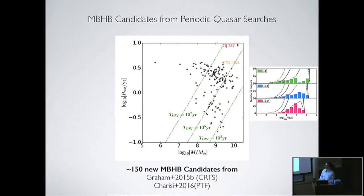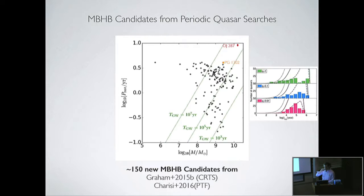I just want to put this up as an example of what is starting to be thought about with these samples. But what also needs more work is making sure that these are actually massive black hole binaries. All I've told you is that from our models we think binaries can create these periodicities. So the task is to vet these candidates.